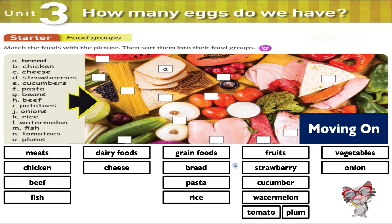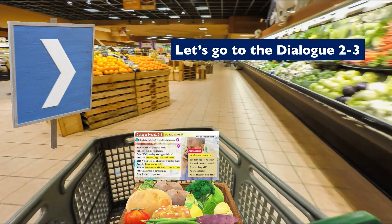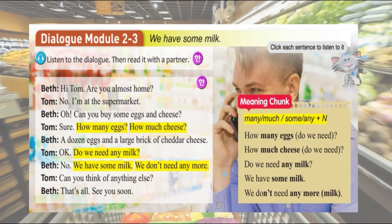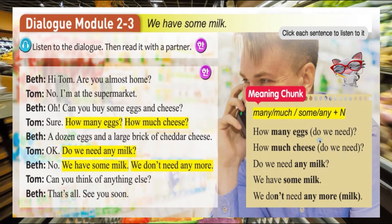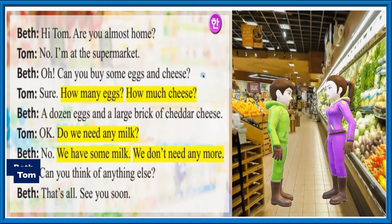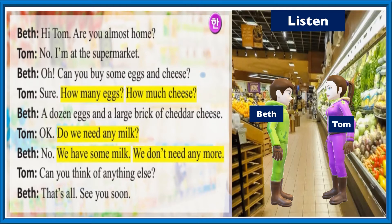All right, that's probably quite enough for the starter. So we're going to move on — a lot of words right there. Let's go to the dialogue, dialogue 2.3. In the dialogue we have, as usual, two characters who are probably talking on the telephone. One of them is at the supermarket shopping. I'm going to be Beth and Yonghi is going to be Tom. Listen along at home and pay attention to the words that appear in square boxes.